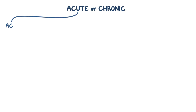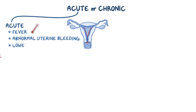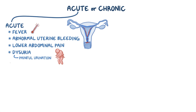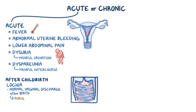Endometritis can be acute or chronic. People with acute endometritis can present with fever, abnormal uterine bleeding, lower abdominal pain, dysuria which is painful urination, or dyspareunia which means pain during sexual intercourse. When endometritis occurs after childbirth, the lochia, which is the normal vaginal discharge after giving birth, can become purulent, meaning yellowish and foul-smelling.